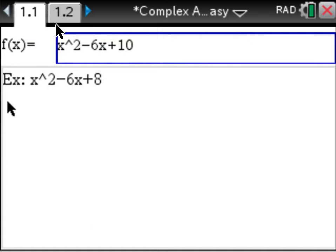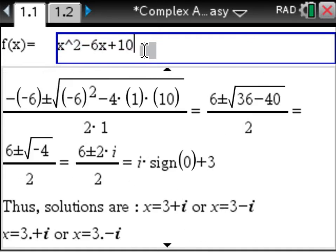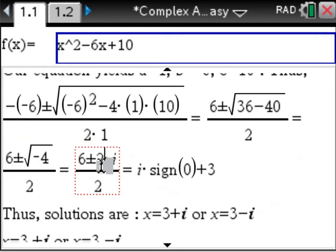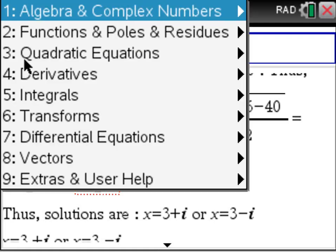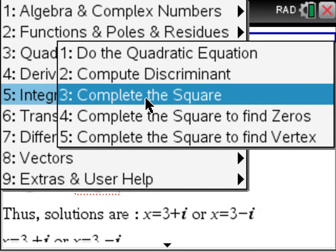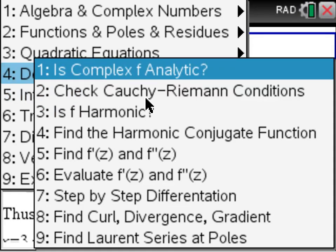Now, quadratic functions, we learned that already in algebra 2. We just enter a quadratic equation and we can see that our answer is going to be 3 plus i and 3 minus i, works like a charm. We can also find the discriminant, complete squares step by step. Let's do some derivatives.